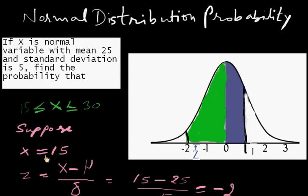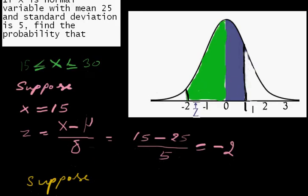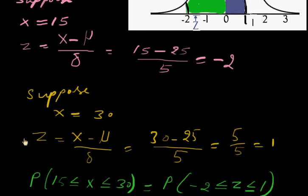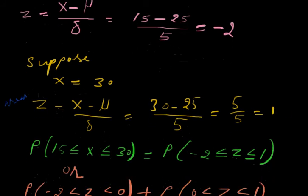If X equals 15, then Z equals X minus mu divided by sigma, which equals negative 2. Suppose X equals 30, then Z equals X minus mu divided by sigma, and it will be 1.